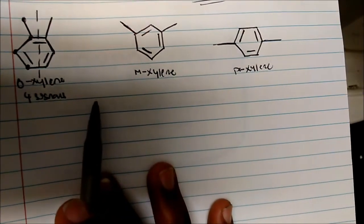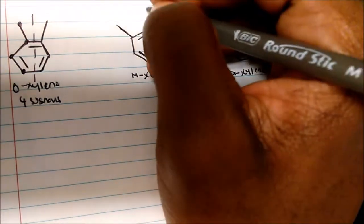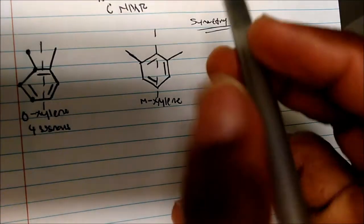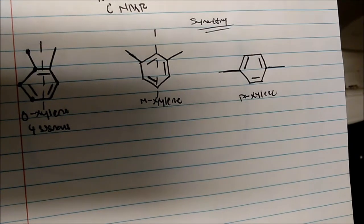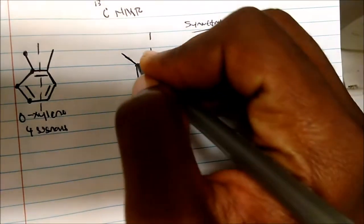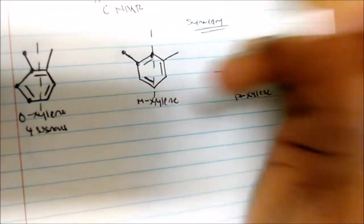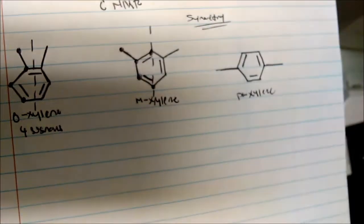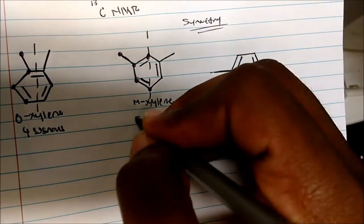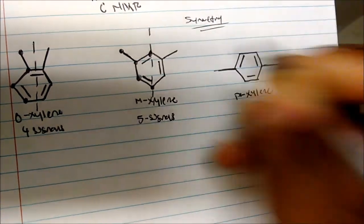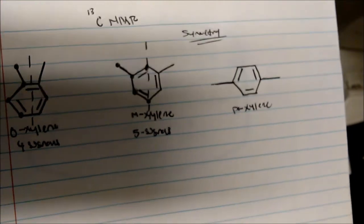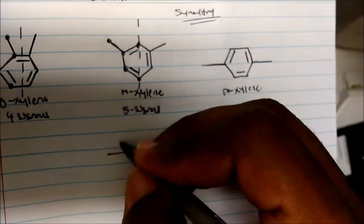How about Meta-Xylene? The plane of symmetry is vertical here. When I draw my line, I get two equal halves. Counting the different carbons: one, two, three, four, five. So I will see five signals. Again, the carbons on one side are essentially the same as the other because the molecule is symmetrical, so in carbon-13 NMR I would only see five signals.